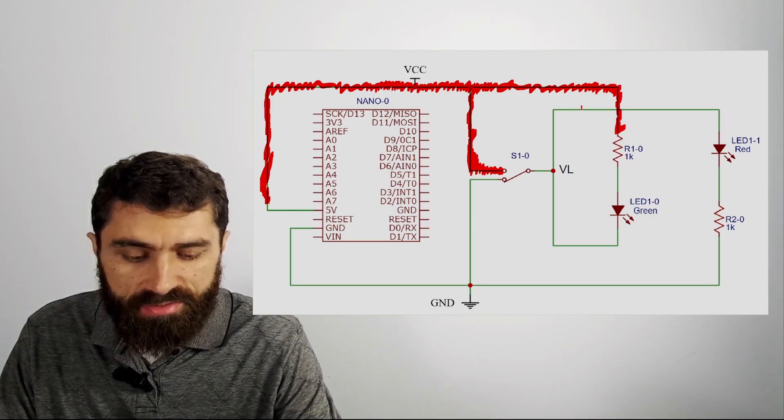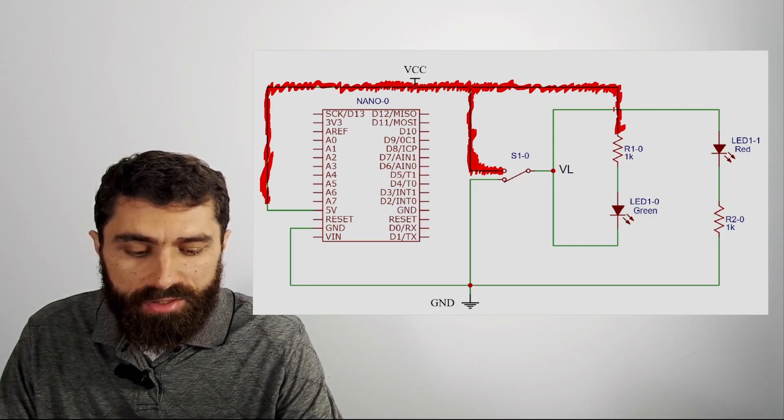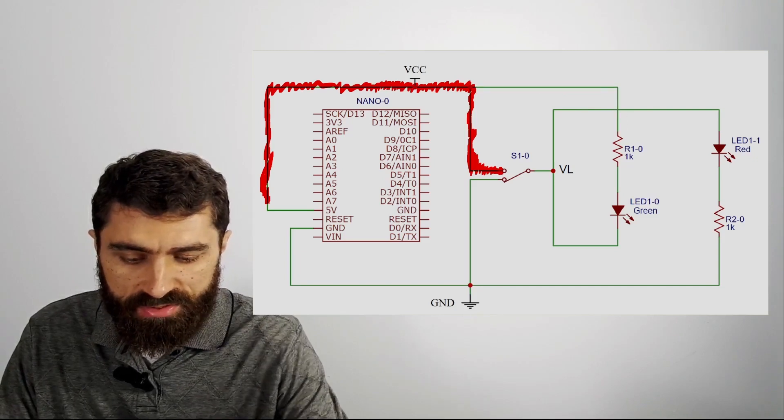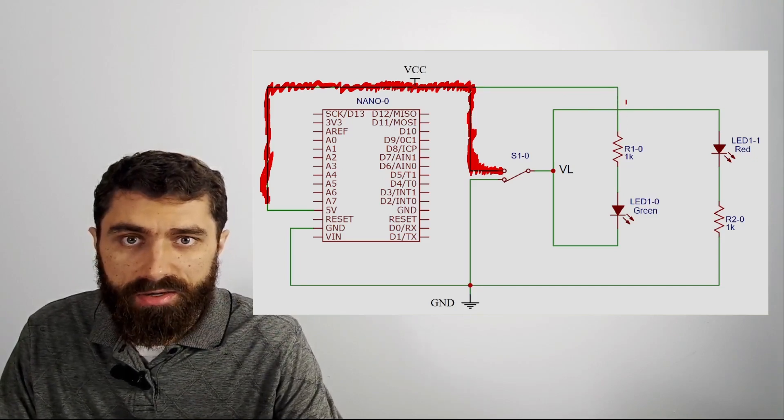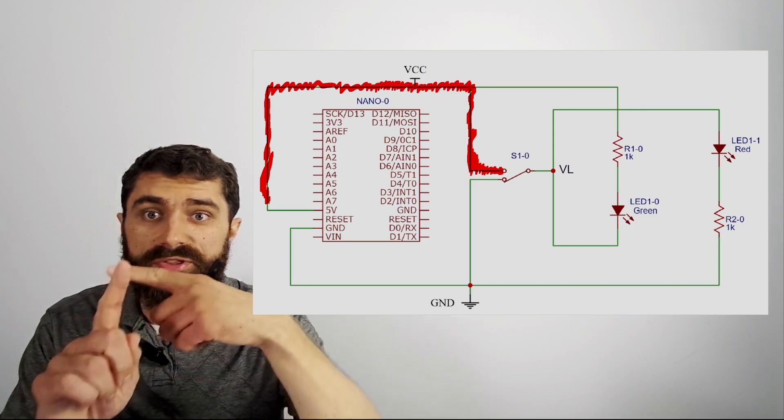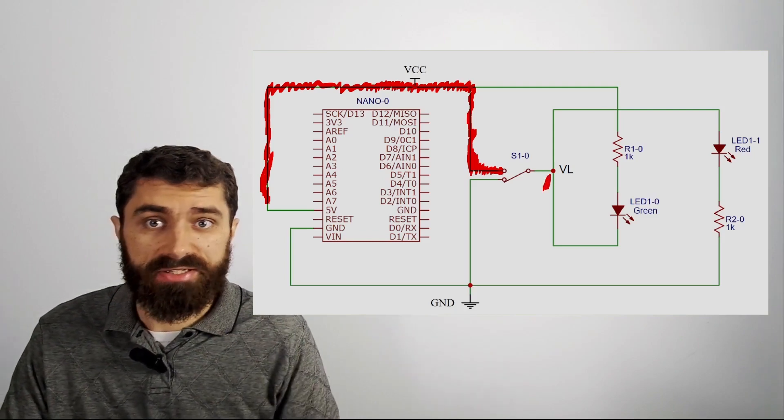One thing I'll mention too is you'll notice these two wires here are crisscrossed. Notice that there's not a dot here. There isn't a dot here, and that means that these wires are just crossing over, but they're not actually connected. You need a dot like over here to indicate that it's connected.